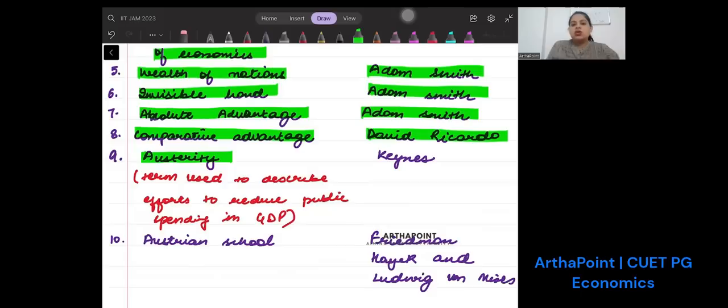Austerity - this is a term that is used to describe efforts to reduce public spending on GDP. It was given by Keynes.